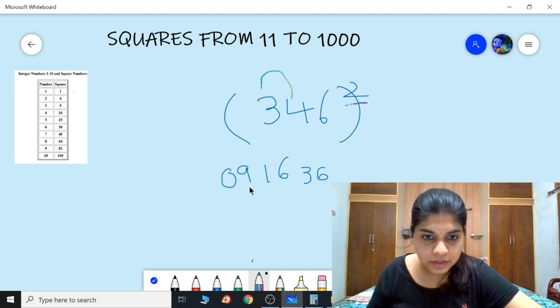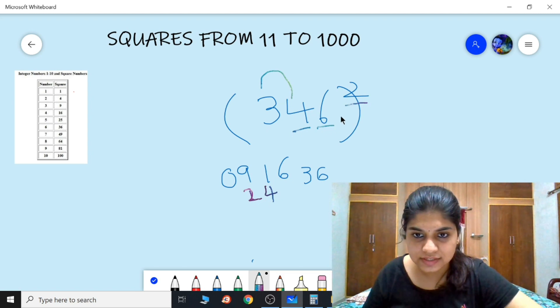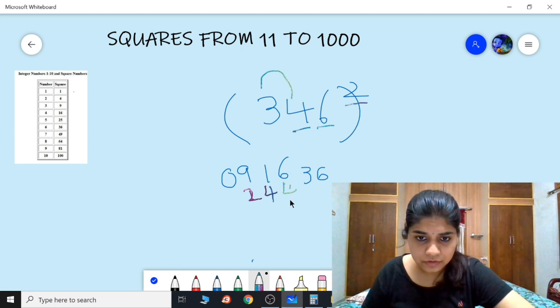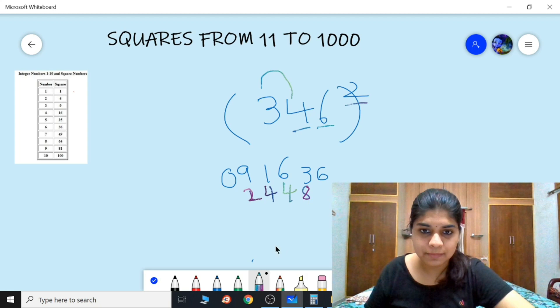Now we need to multiply first and second digits, 6 into 2. So that is 3, 4 is 12, and 12 into 2 is 24. Now leaving the first one, we need to multiply 4, 6, and 2. So 12 fours is 48.